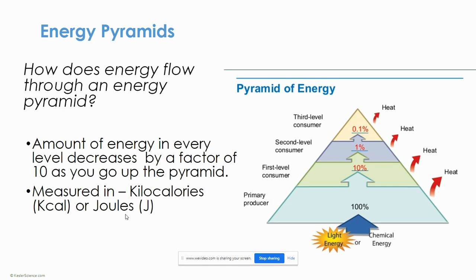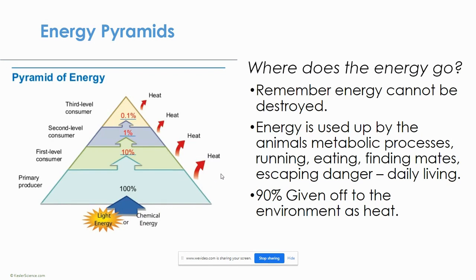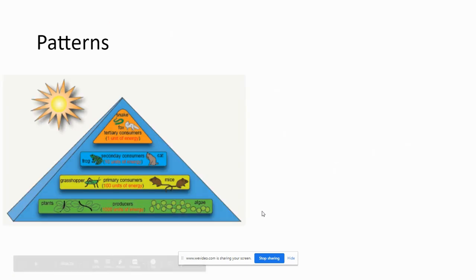Energy is measured in the joule (J-O-U-L-E). Kilocalories are also a measure of energy — one kilocalorie equals 4,184 joules. When talking about food, it is potential energy. Energy is never created or destroyed. It is used up by the animal's metabolic processes like running, eating, finding mates, and escaping danger. All daily living uses up energy from food. 90% is given off to the environment as heat, so animals can only use 10% of the energy from the level below.